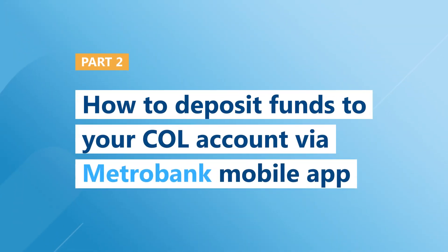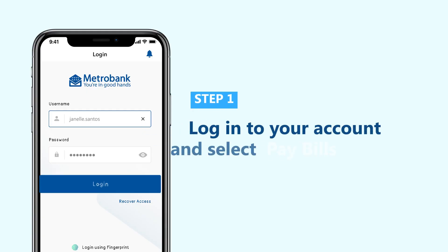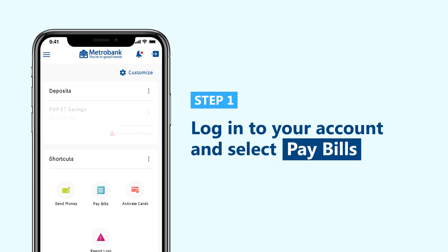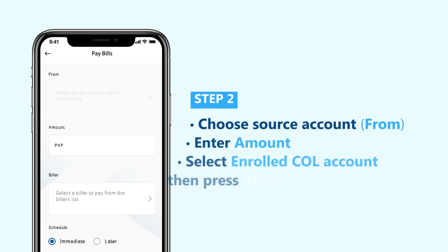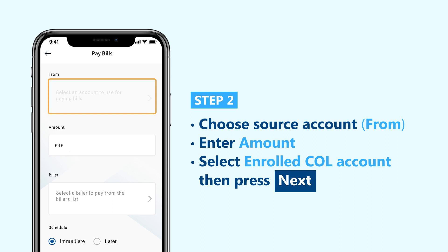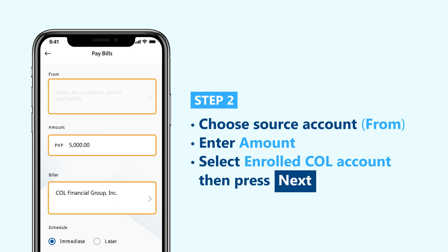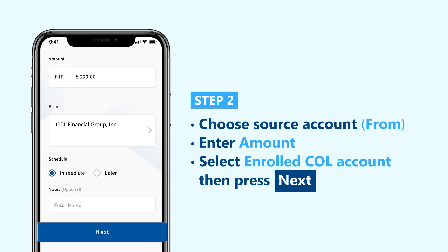Now let's move on to Part 2: how to deposit funds to your COL account using the Metro Bank mobile app. Log in to your Metro Bank mobile banking account and select Pay Bills. Choose your Metro Bank source account, enter the amount you want to deposit, and select COL Financial as the biller. Press Next to proceed.